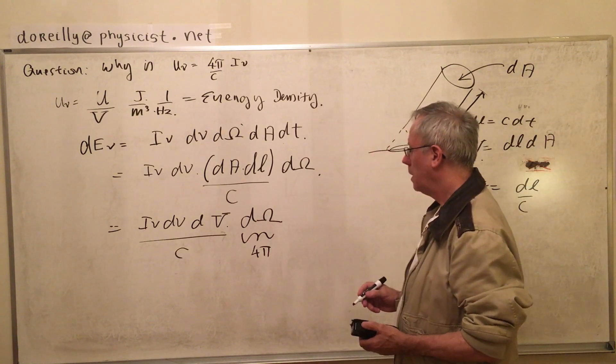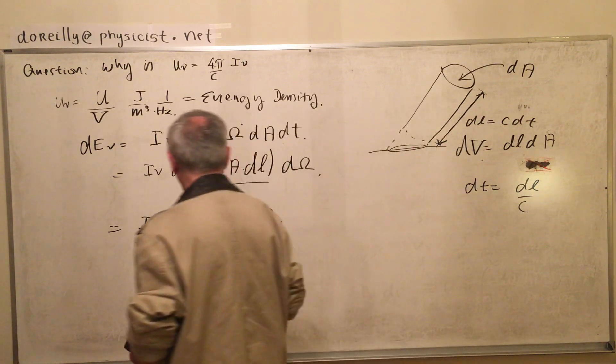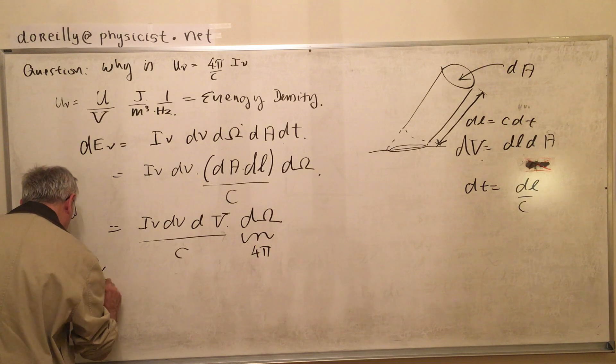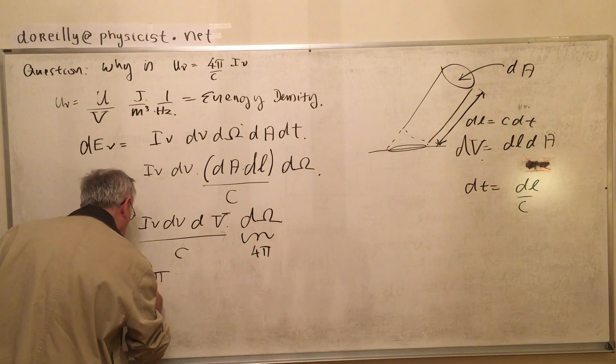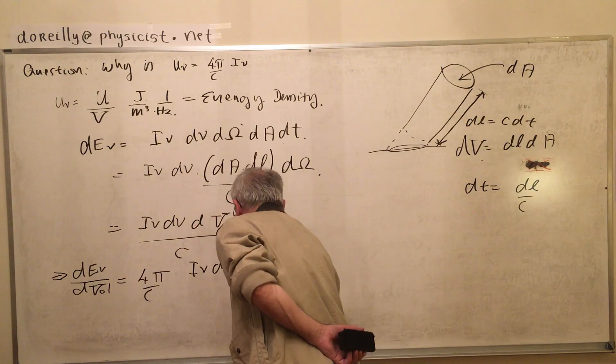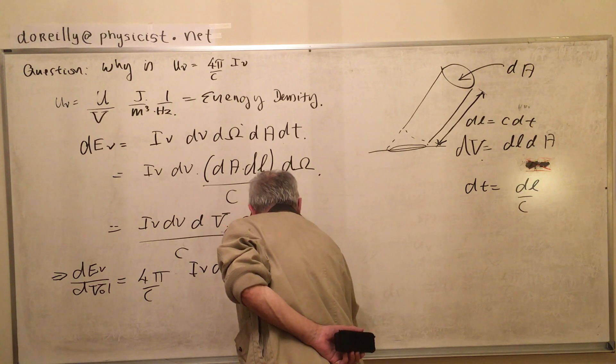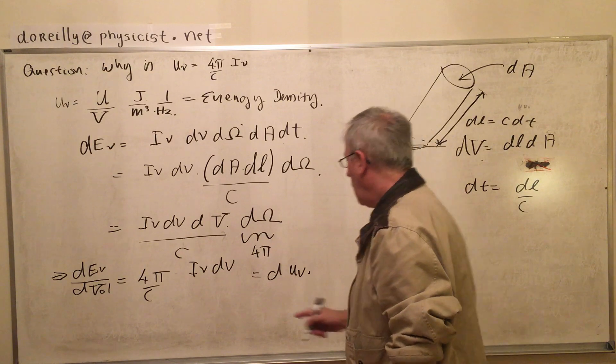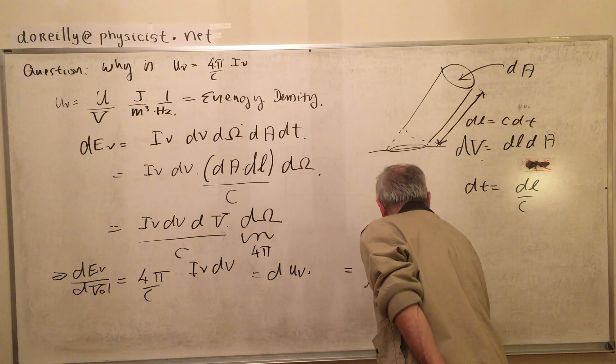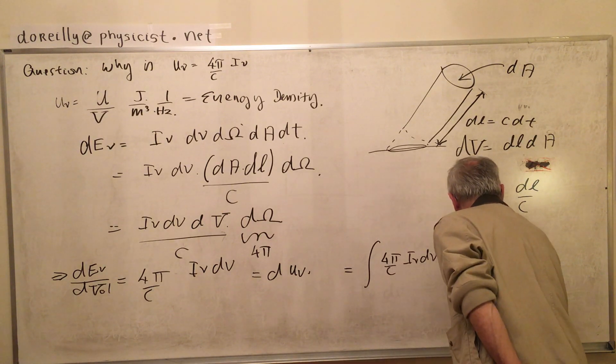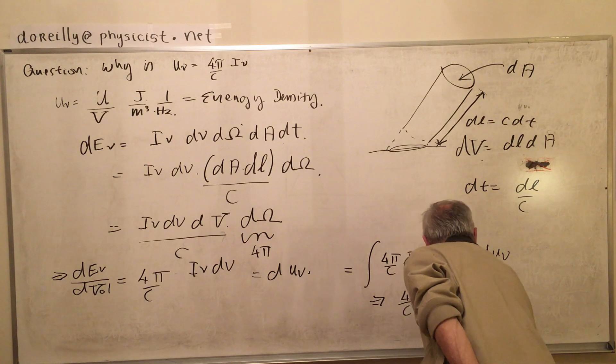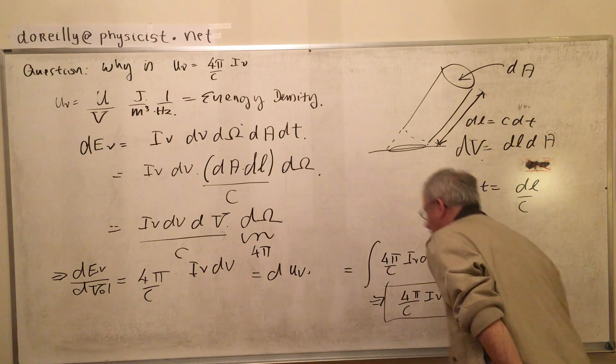Now we want to integrate. For the case of a black body, this is going to be 4π because isotropic radiation. And the volume, I guess we can divide it out. Now this is basically the energy density. So the whole thing, we'll integrate it out.